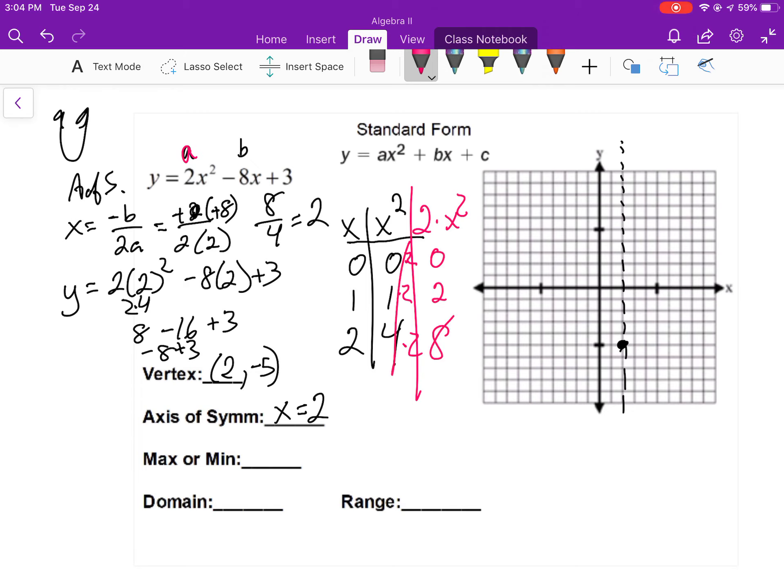So I'll go 0, 0, over 1, up 2, over 2, up 8. I think I counted right. You can double check that. And there is my parabola.